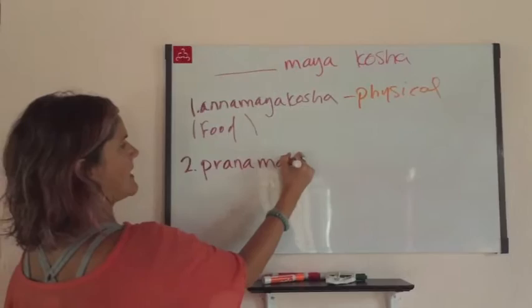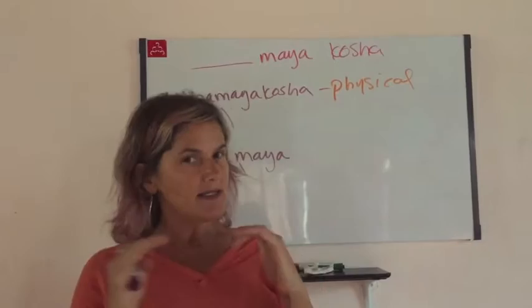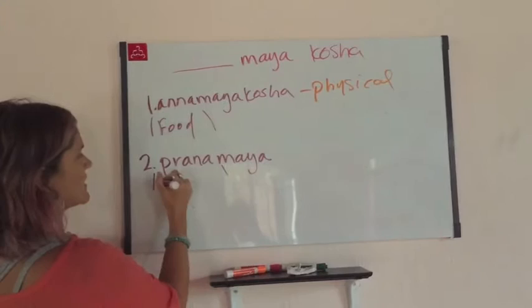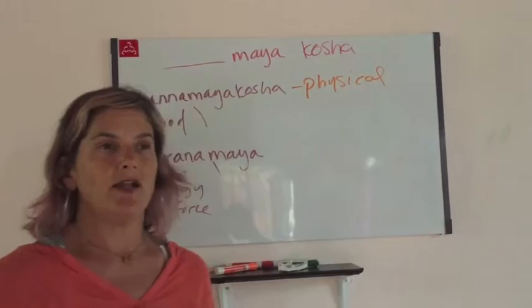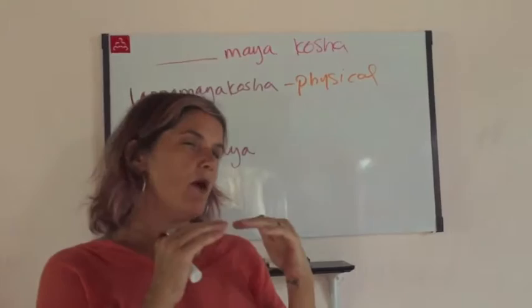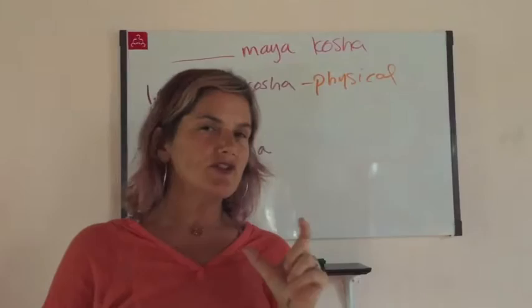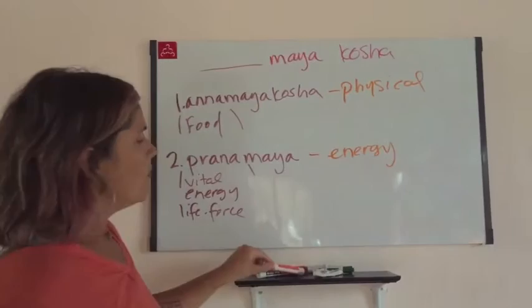The next level is called the Pranamaya Kosha. 'Prana' is often translated as breath, but breath and prana are not exactly the same thing. Prana is the umbrella term — it's vital energy, or life force. Breath is part of that vital energy and a vehicle for prana, but it's not a one-to-one translation. So prana is really more like energy or life force, and the Pranamaya Kosha is that energy body.